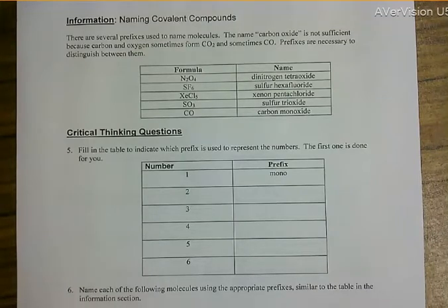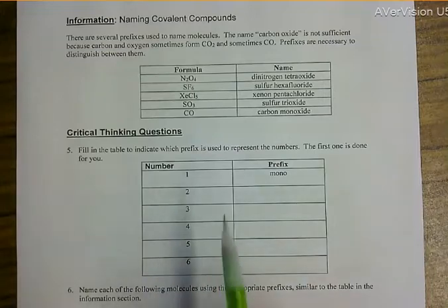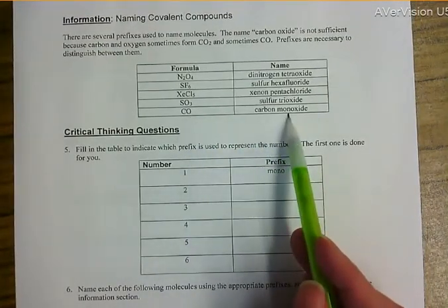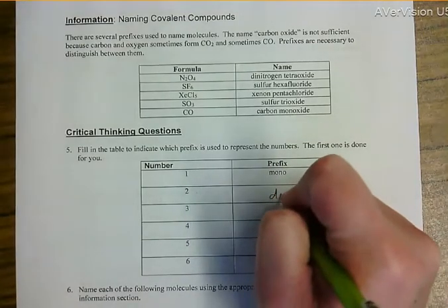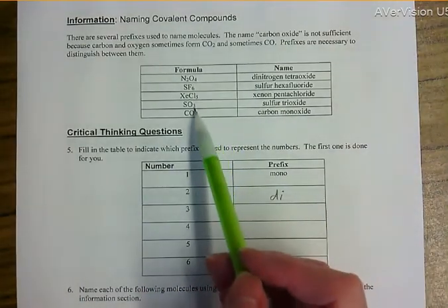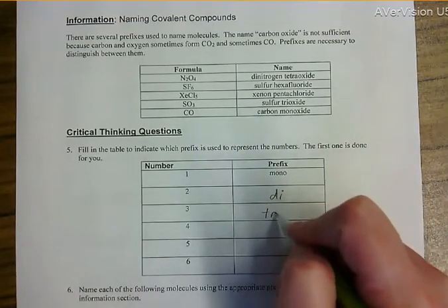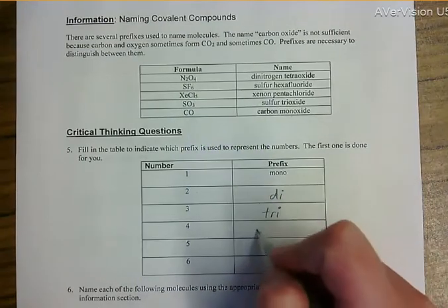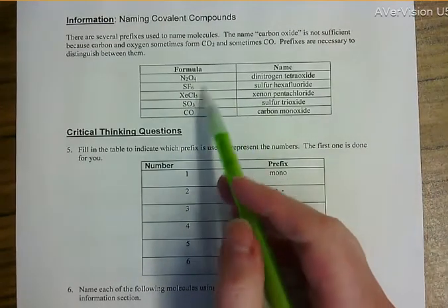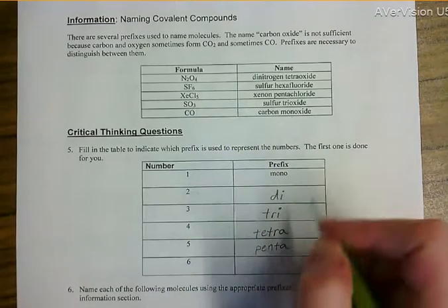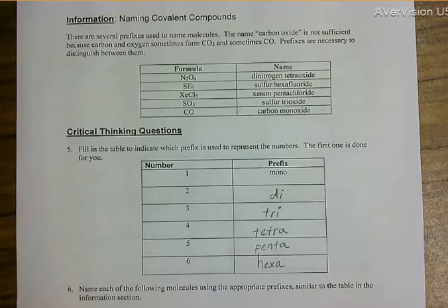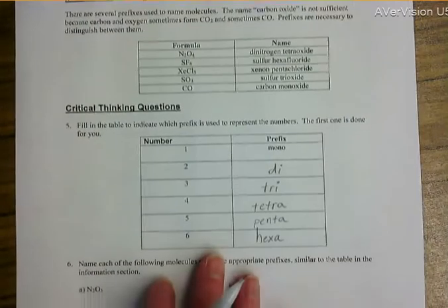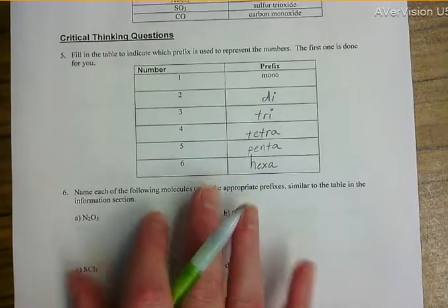Critical thinking question number five: fill in the table to indicate which prefix represents each number. For one, the prefix is mono. For two, it is di. For three, it is tri. For four, it is tetra. For five, it is penta. For six, it is hexa. These are not something you have to have memorized — the prefixes are provided on your helper sheet.